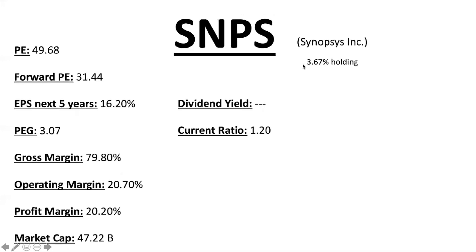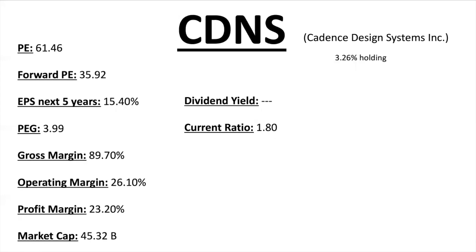Synopsys Incorporated is a little overvalued at PE ratio 49.68 — kind of like NVIDIA with that high PE — but it has good future growth with Forward PE 31.4, EPS next five years 16.2%, giving a PEG ratio of 3.07. High gross margins, but operating margin and profit margin drop significantly because they're spending a lot on R&D and operational costs, bringing profit margin down to 20% — still in the good section. Market cap just under $50 billion, no dividend, current ratio 1.20.